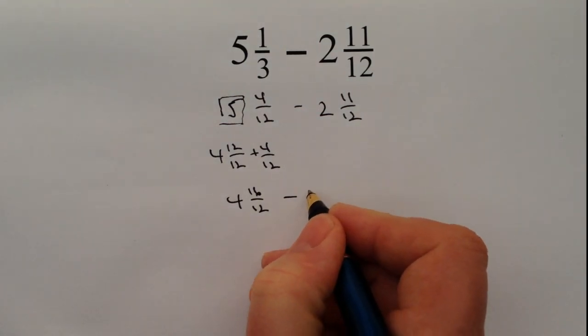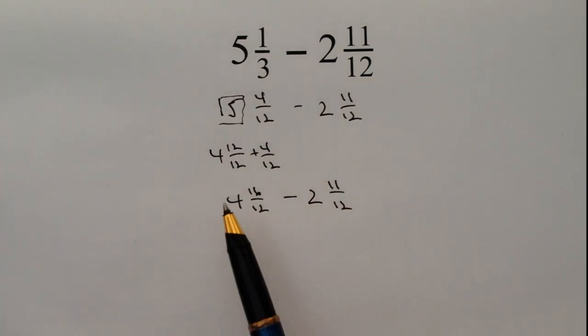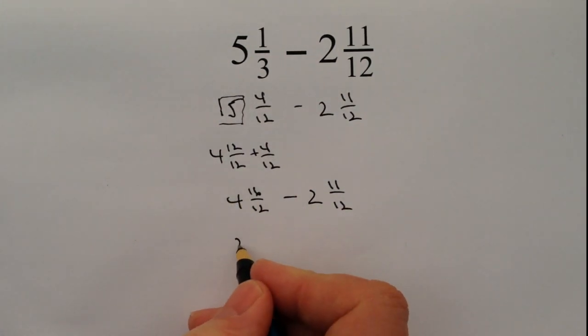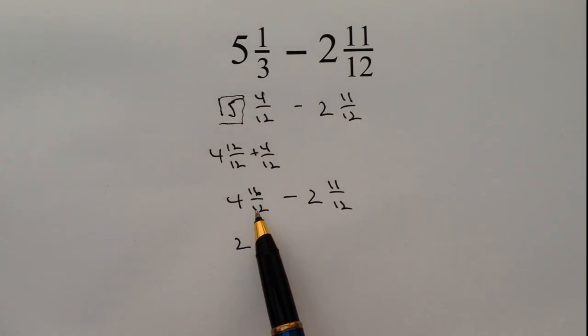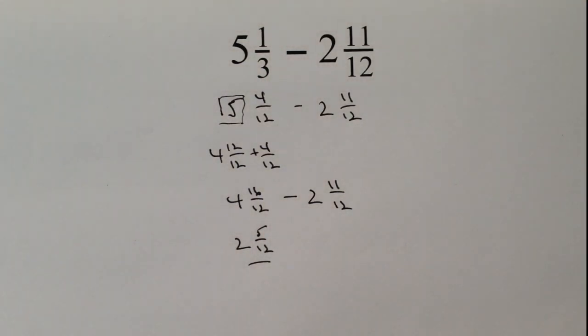So now it's relatively straightforward. If I'm minus 2 and 11 twelfths, I get 4 take away 2, well that's 2, and I've got 16 twelfths take away 11 twelfths, so that's going to be 5 twelfths. And that's the answer to this particular question.